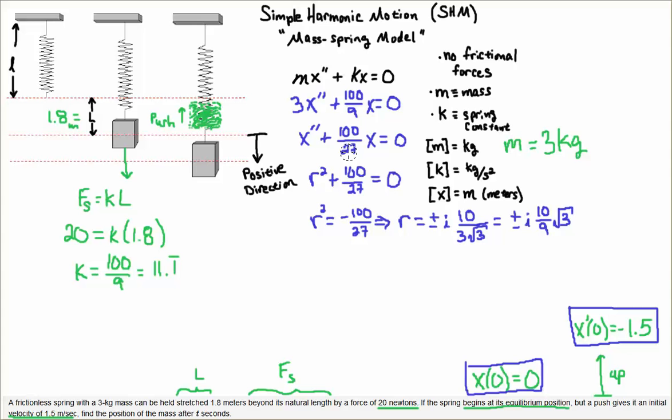If I solve this differential equation, I divide everything by 3. 100 over 9 divided by 3 is 100 over 27. I write the characteristic equation: r² + 100/27 = 0. The two matches the order, and this is r to the 0 because it's a 0 derivative.